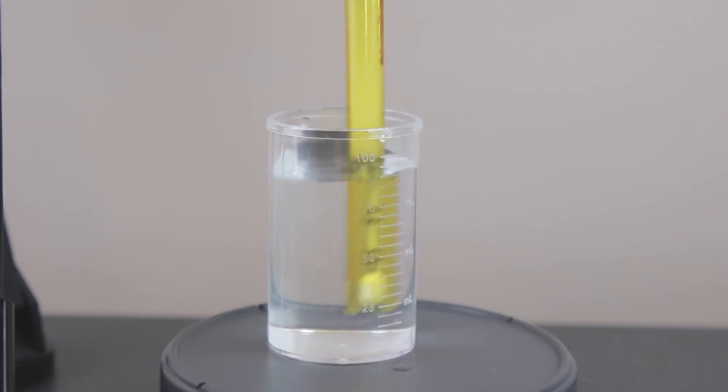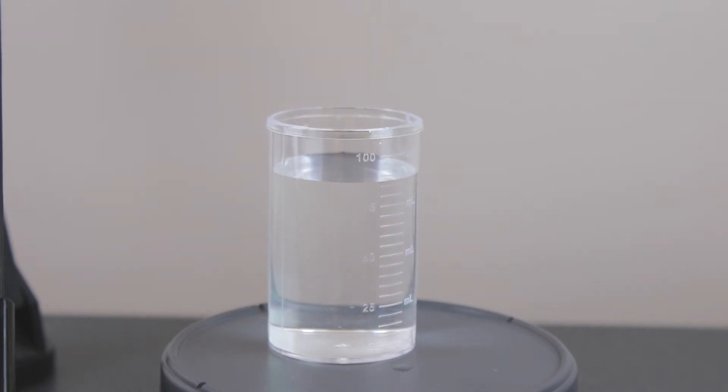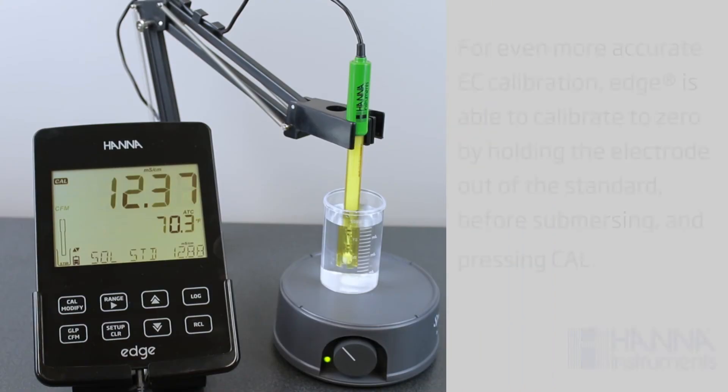Press CAL to enter calibration mode, then rinse the electrode in your first beaker with your standard, then submerge it into the second beaker for calibration. It's best to use a magnetic stirrer for the most accurate readings.